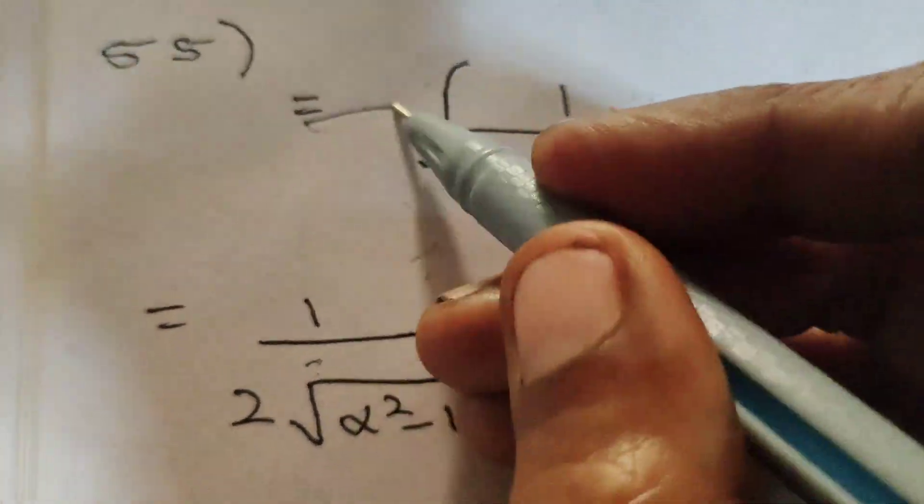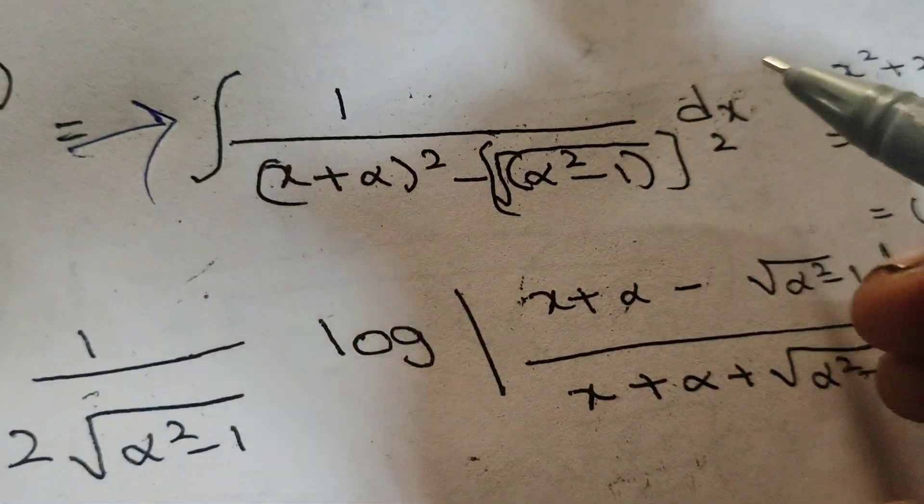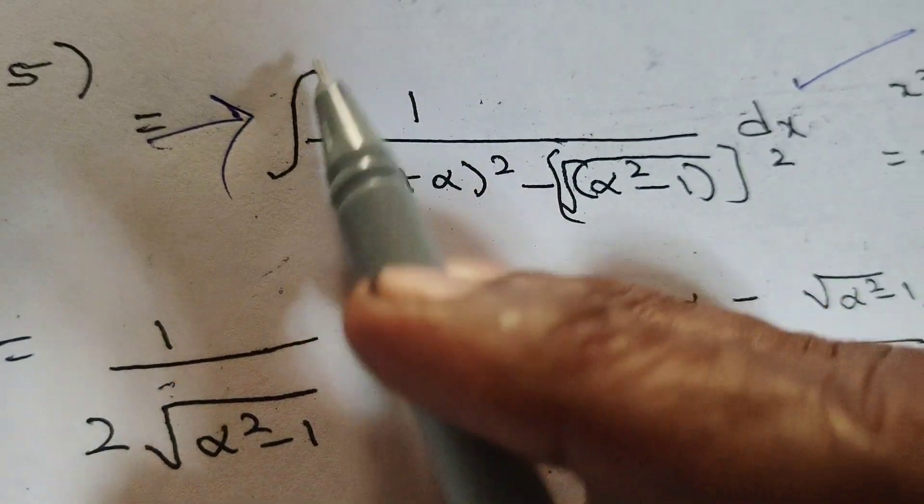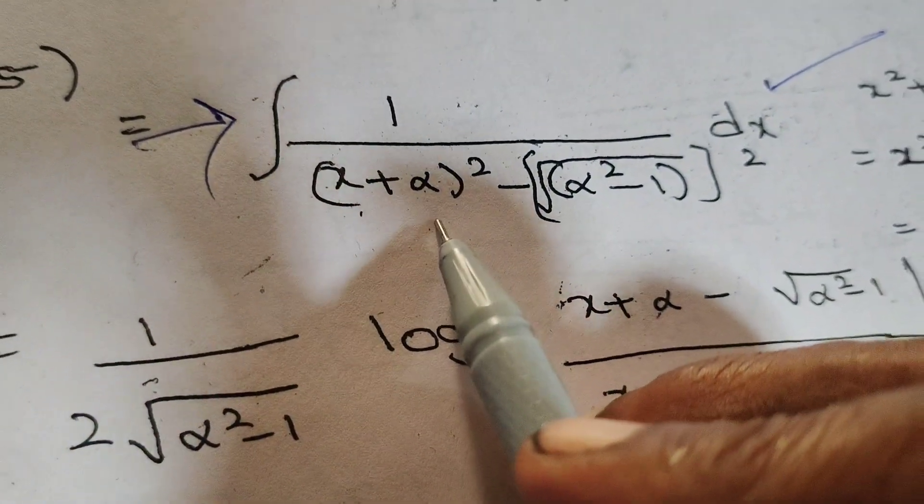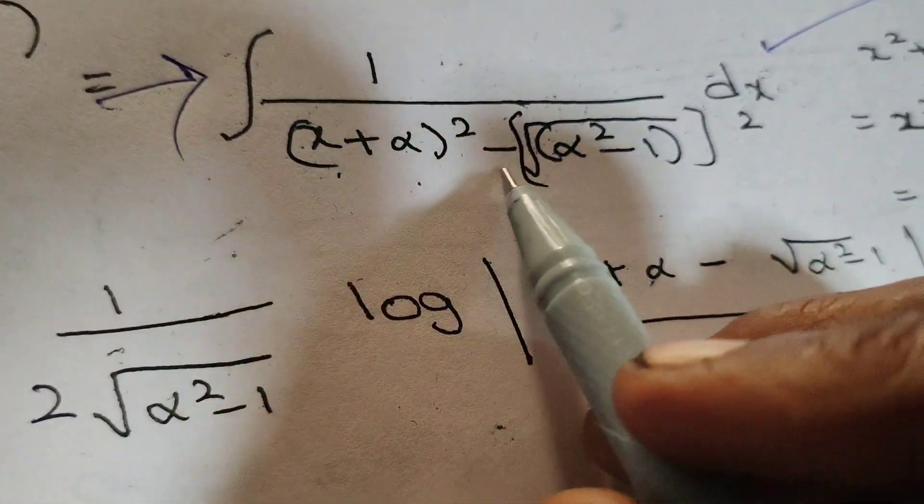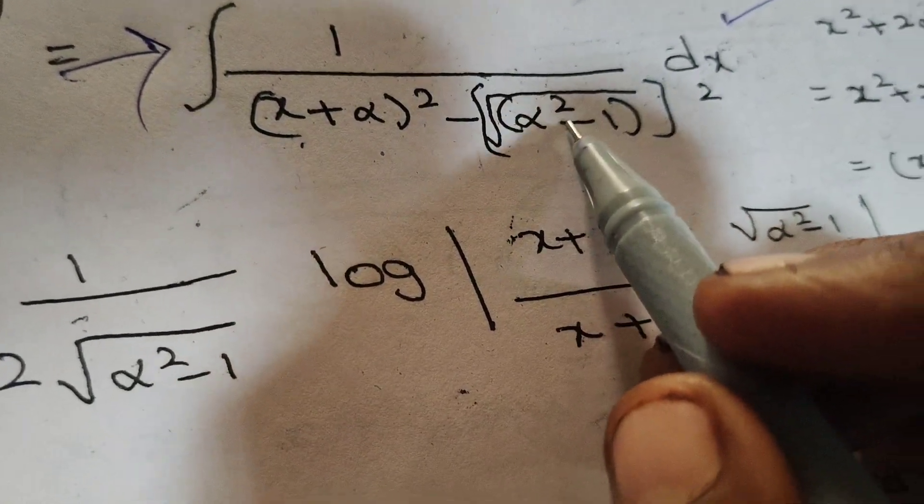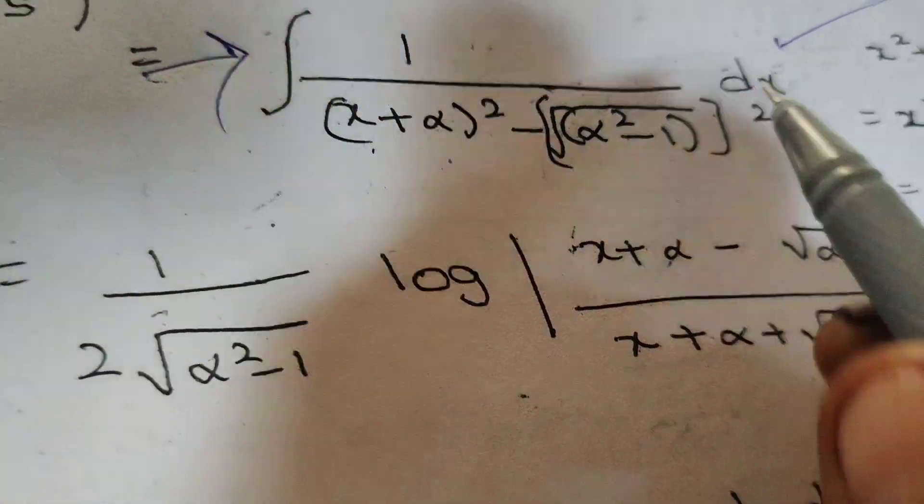This is Dr. Aithi. Now, today we are going to explain and evaluate this integral problem: integral of 1 by (x plus alpha) whole square minus root of (alpha square minus 1) whole square dx.